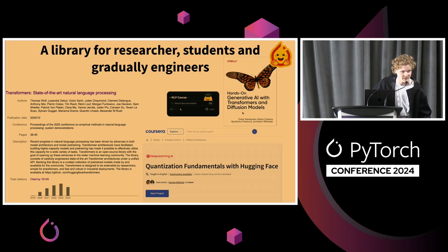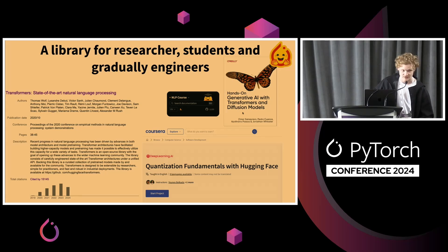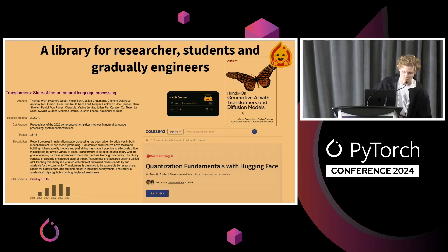The Transformers paper is cited every year — people who publish about machine learning, AI, language models, and Transformers, they cite Transformers. We also invested in courses: NLP courses, courses in collaboration with Coursera, and created books about how you can use Transformers and Diffusion models. The HuggingFace ecosystem was growing quite a lot.